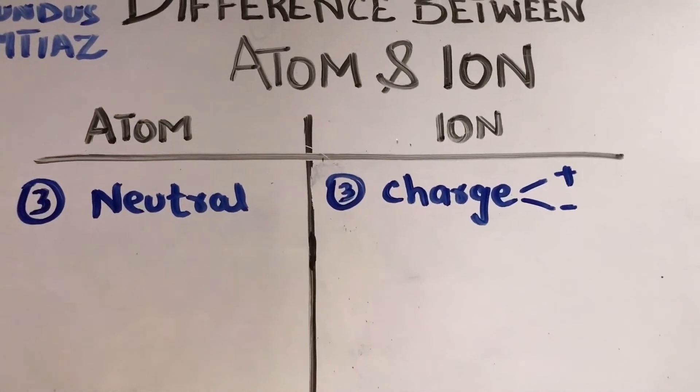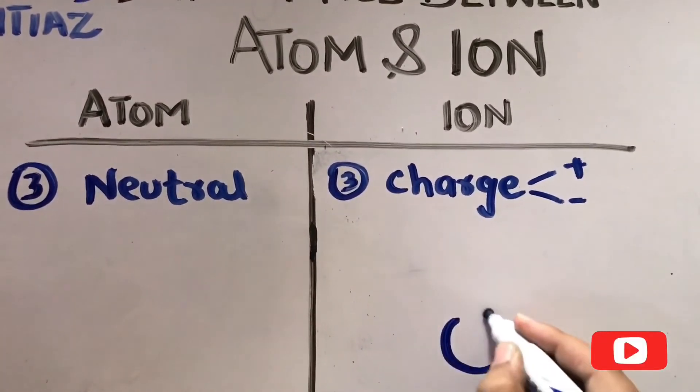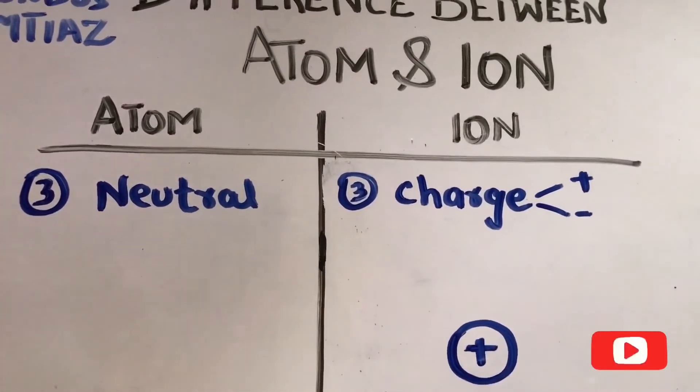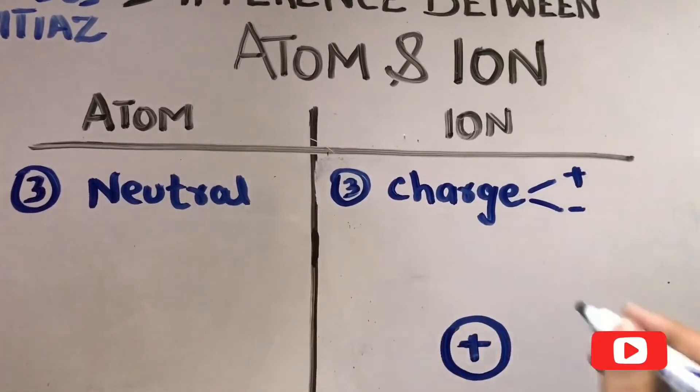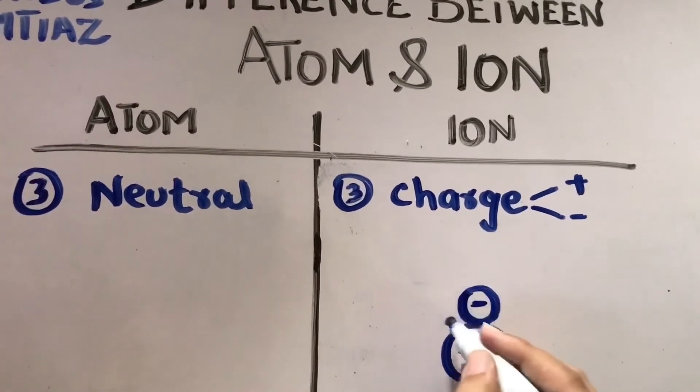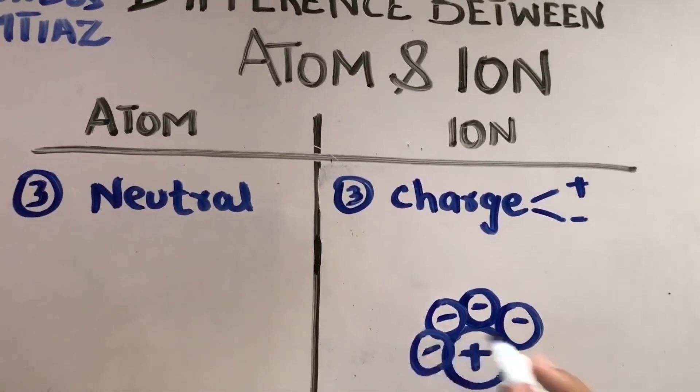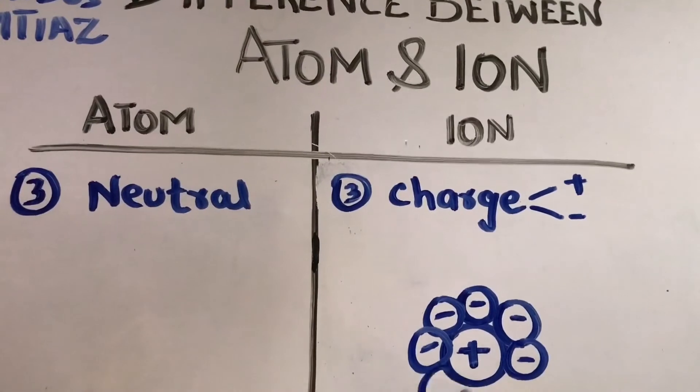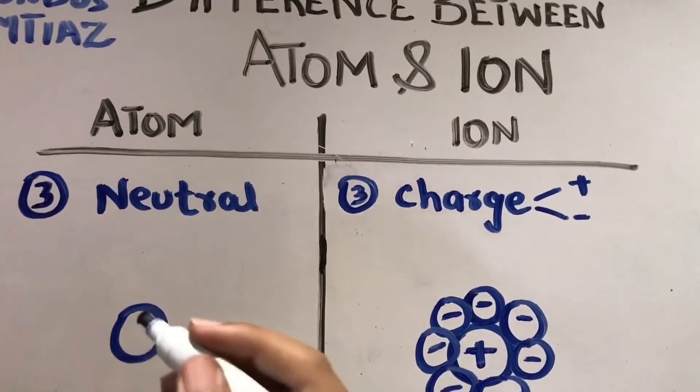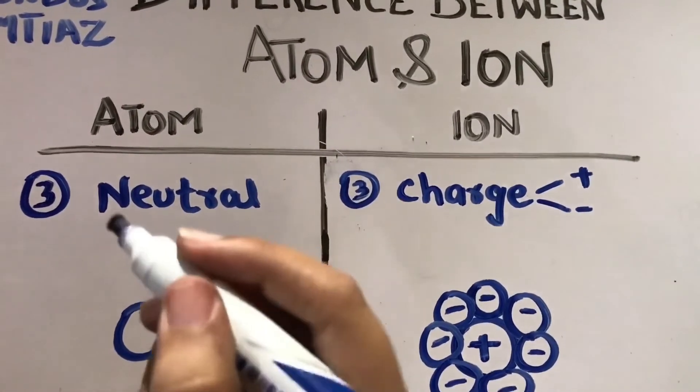So the fourth point is this. A very basic thing is that if there is an ion that is containing a positive charge or negative charge, which is attracted? Of course, if we attract positive, then we will do negative. Obviously. So it has attraction power. But if there is an atom, if there is no charge, there will be no attraction.